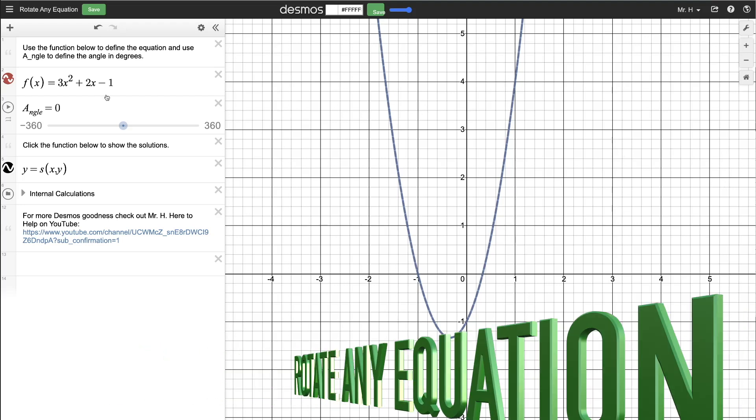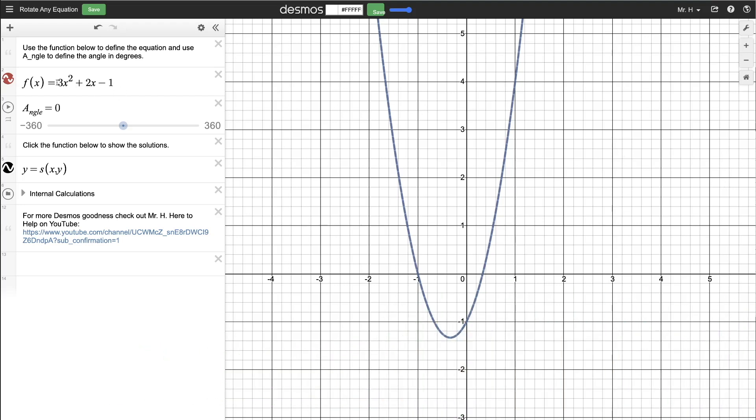So notice here I have an equation set up with this nice little quadratic equation, and I can rotate the equation to any way that I want. Now notice that as soon as I rotate this, you see this would not pass the vertical line test over here.